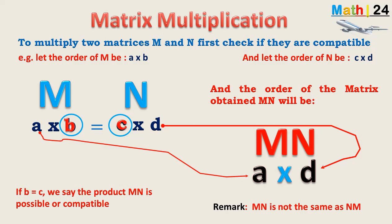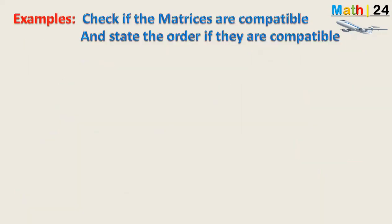Important remark: the matrix M times N is not the same as the matrix N times M. Although you may see some cases where they appear similar, MN does not mean the same as NM.